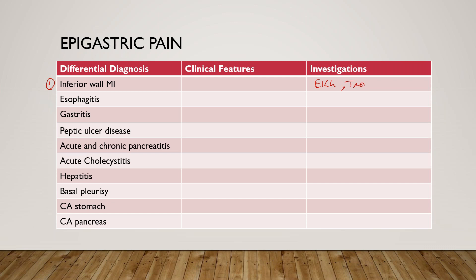Number two is esophagitis. Acid reflux is the most common cause of esophagitis, which causes retrosternal burning and epigastric pain, relieved by antacid. Workup-wise, you can consider barium swallow, EGD, and pH monitoring.